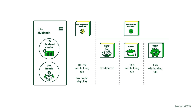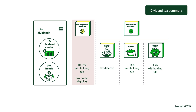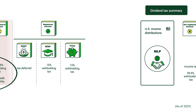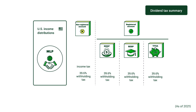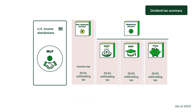It's a similar case for US corporate bonds held in non-registered accounts — any interest they generate is subject to a 10% withholding tax, but they're eligible for a foreign tax credit. Then there's the issue of Master Limited Partnerships, or MLPs. They aren't dividend stocks per se, but they do pay distributions. And they don't enjoy favorable tax treatment at all — you'll need to pay a 39.6% withholding tax no matter which type of account they're held in, and they're ineligible for foreign tax credits.